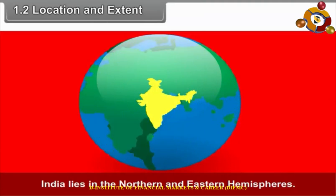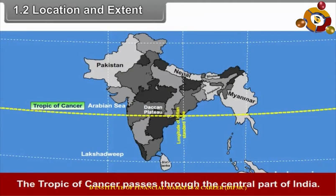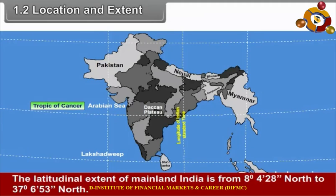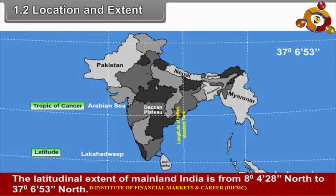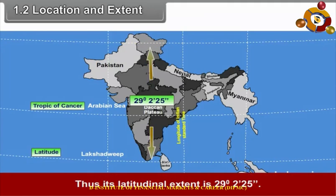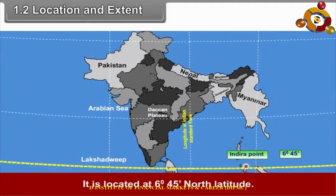India lies in the northern and eastern hemispheres. It has a central position in the southern part of the ancient continent. The Tropic of Cancer passes through the central part of India. The latitudinal extent of mainland India is from 8 degrees 4 minutes 28 seconds north to 37 degrees 6 minutes 53 seconds north, giving a latitudinal extent of 29 degrees 2 minutes 25 seconds. The southernmost tip, Indira Point in the Nicobar Islands, is located at 6 degrees 45 minutes north latitude.